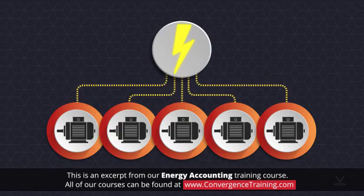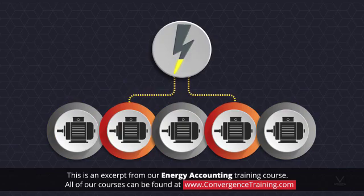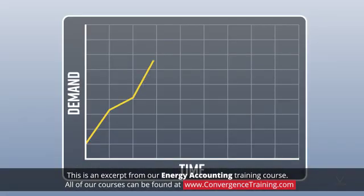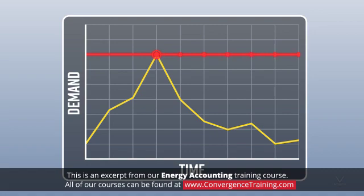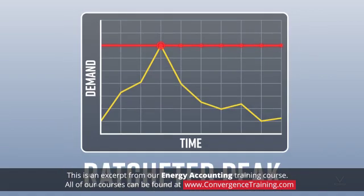By trying to avoid operating large pieces of electricity-consuming equipment simultaneously, the maximum demand can be kept down. A utility typically looks at 15-minute periods throughout a billing cycle. The demand charge per kilowatt hour is based on the maximum demand period in the cycle, and that charge is applied to all kilowatt hours consumed in the billing cycle. The practice of basing the demand charge on the maximum demand period in a cycle is called a ratcheted peak.